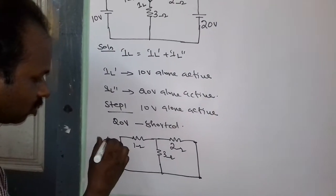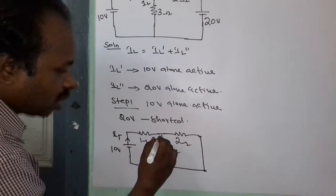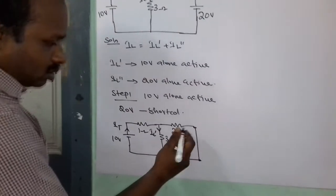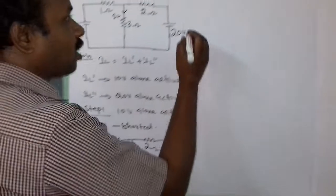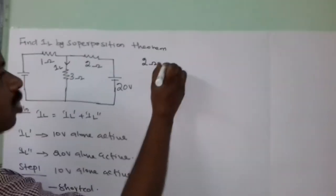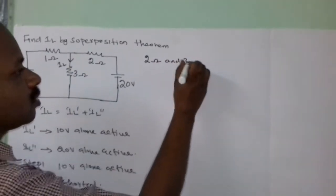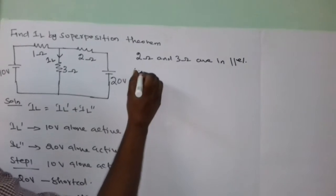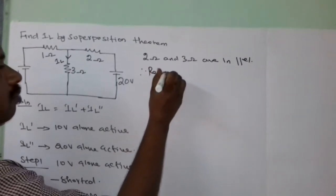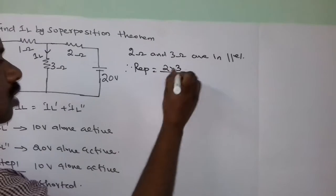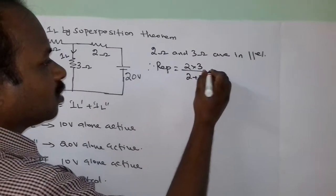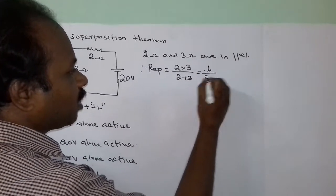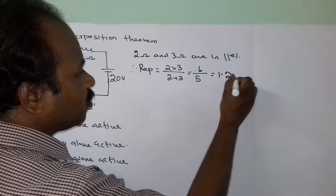We make a short circuit in the place of the 20V source. The total current IT from the source is IL dash. Here, this 2 ohm and 3 ohm are in parallel. R equivalent parallel is 2 × 3 divided by 2 + 3, equal to 6/5, equal to 1.2 ohm.